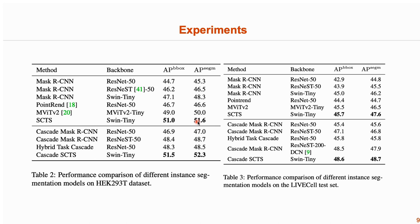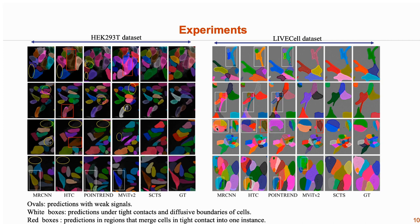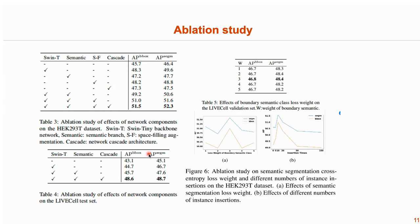This table summarizes the performance comparison of the proposed model against widely used instance segmentation models. Experiments show that our model outperforms these models on the two datasets. This figure shows the qualitative comparison of our model with other competing models. As can be seen, our approach achieves better results for high-density, tight contact, weak regions, and elongated cells.